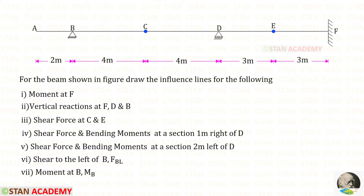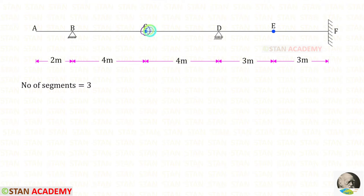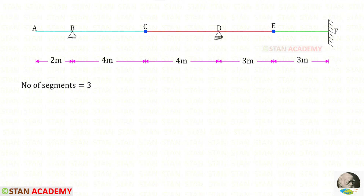In this beam, there are two internal hinges at points C and E. About the internal hinges, we need to find the number of segments. Here there are three segments: A-B-C, C-D-E, and E-F. You can see that I have given different colors for the segments.